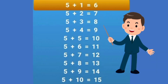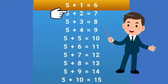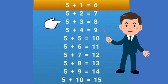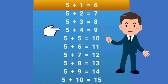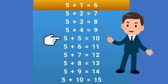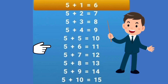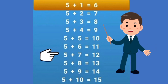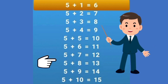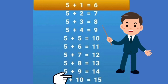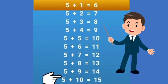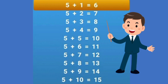Dear children, next see this another table. 5 plus 1 is equal to 6. 5 plus 2 is equal to 7. 5 plus 3 is equal to 8. 5 plus 4 is equal to 9. 5 plus 5 is equal to 10. 5 plus 6 is equal to 11. 5 plus 7 is equal to 12. 5 plus 8 is equal to 13. 5 plus 9 is equal to 14. 5 plus 10 is equal to 15. Are you clear children?